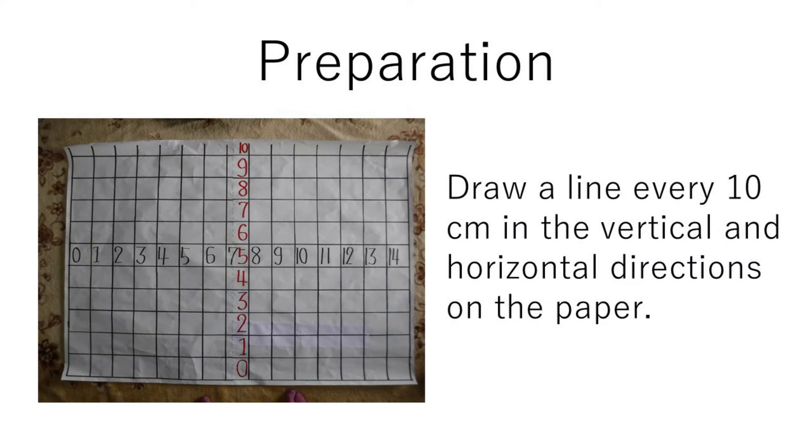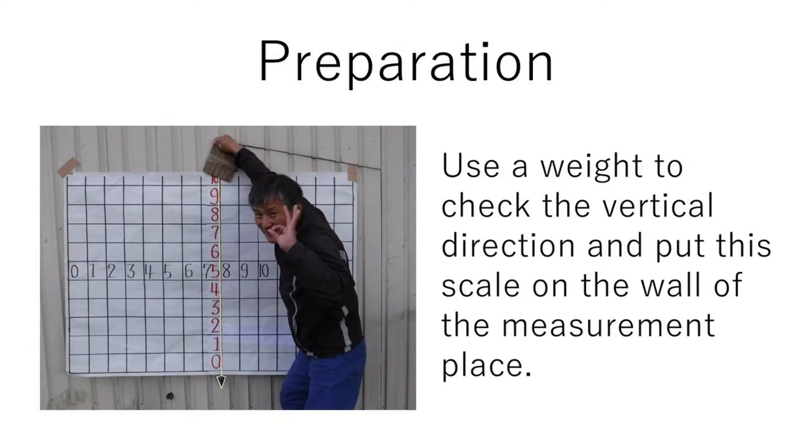Make a large scale for measurement. Draw a line every 10 cm in the vertical and horizontal directions on the paper. Use the weight to check the vertical direction and put this scale on the wall of the measurement place.